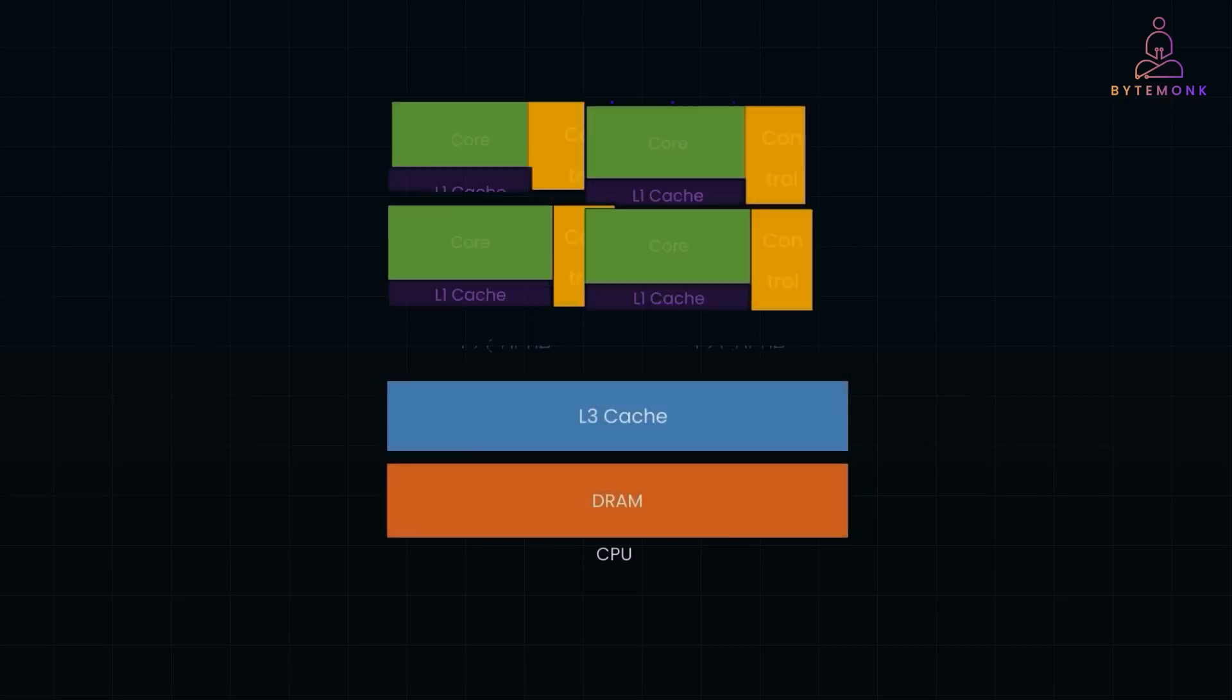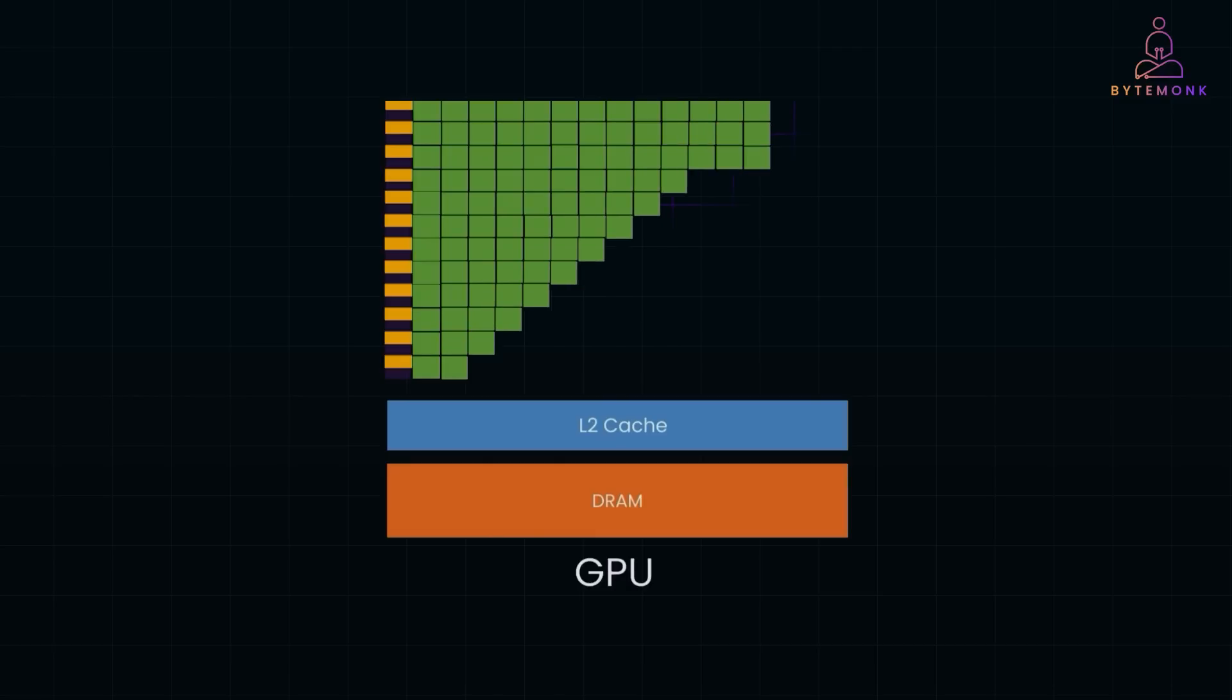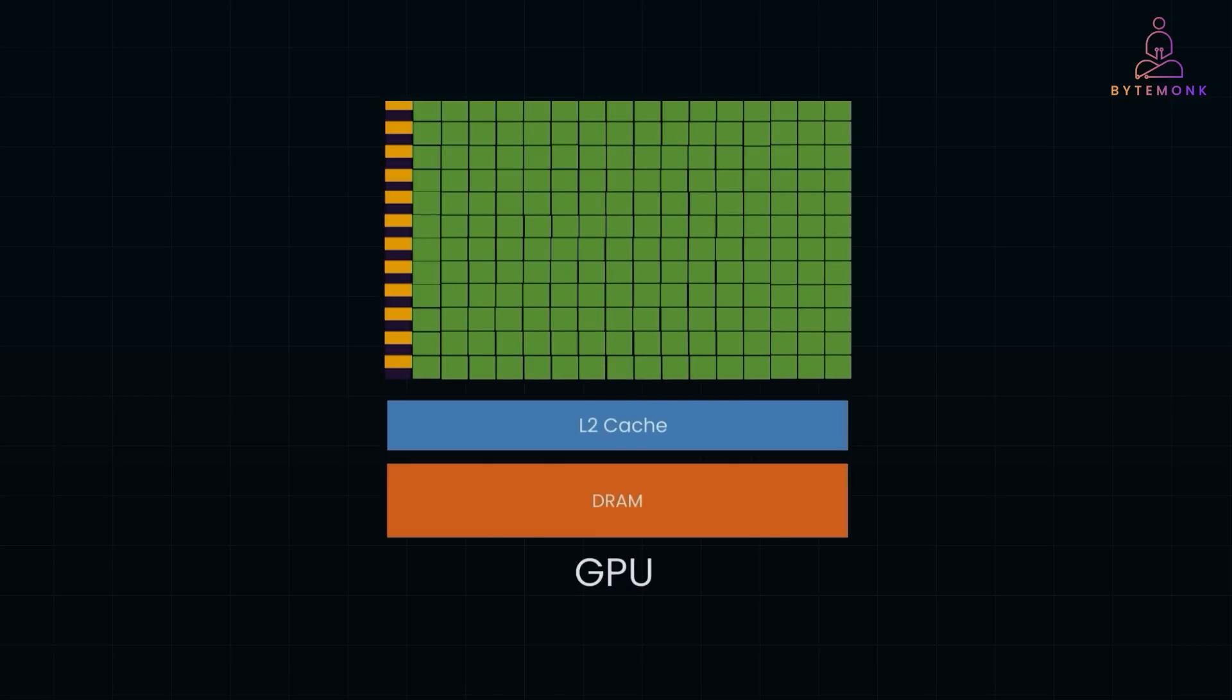Enter GPUs, or graphics processing units. Originally designed for rendering graphics in video games, GPUs are built to handle thousands of small tasks at once. And this makes them perfect for the parallel processing required by AI and machine learning.